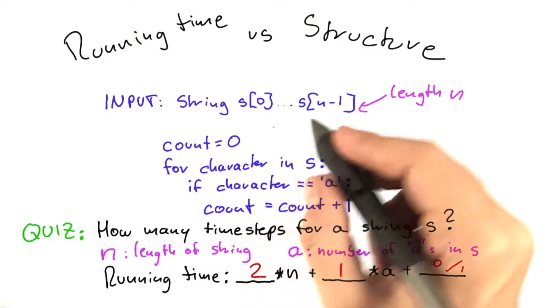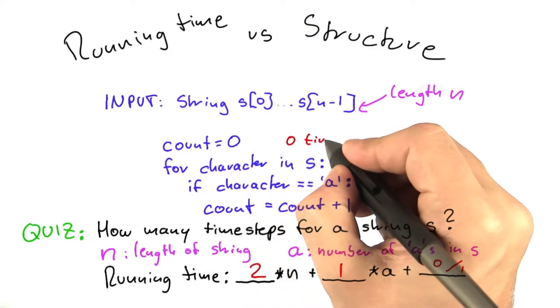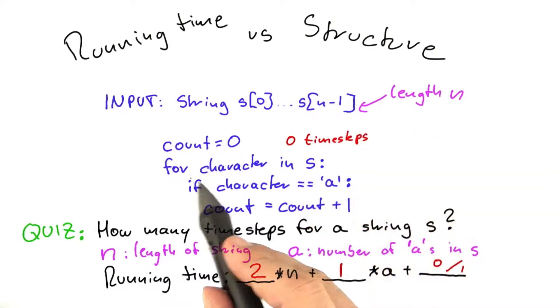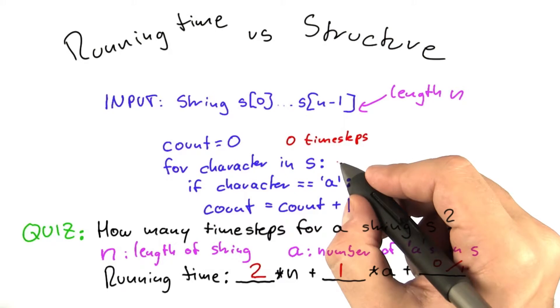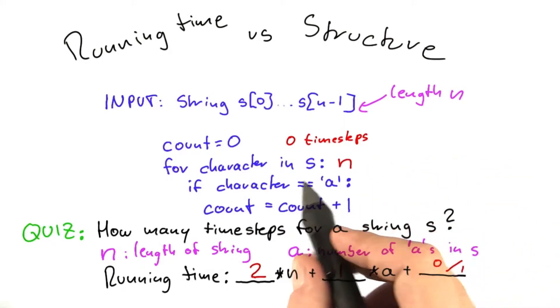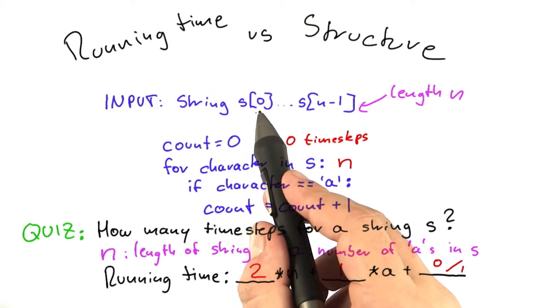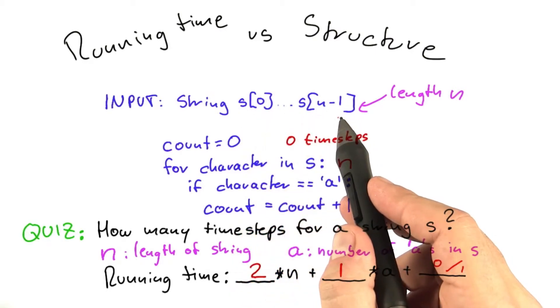So the first line, again, takes zero time steps, as in all previous examples. For the second line, it either takes n time steps if you assume that this for loop here goes exactly through each character of the string and then stops immediately,